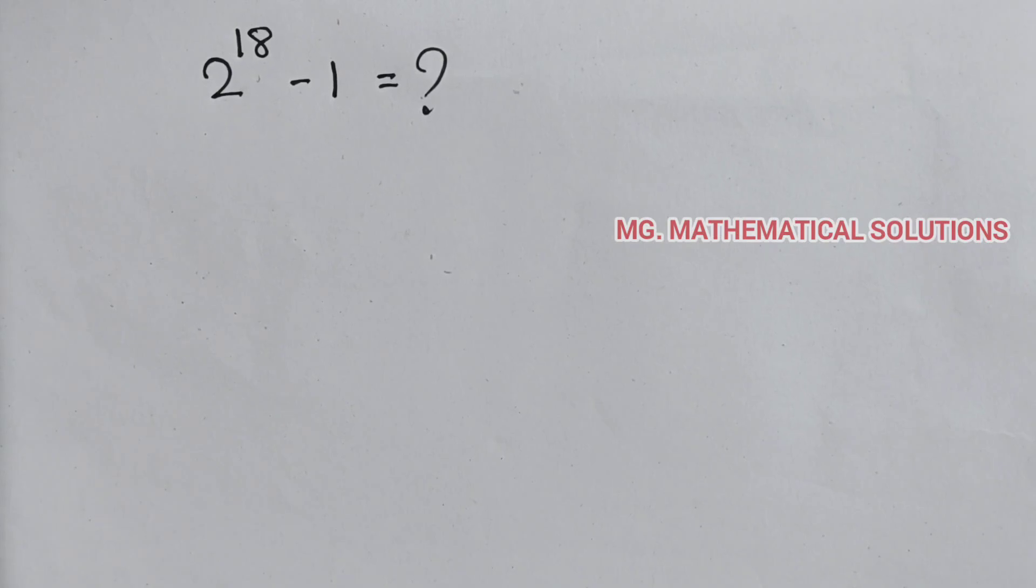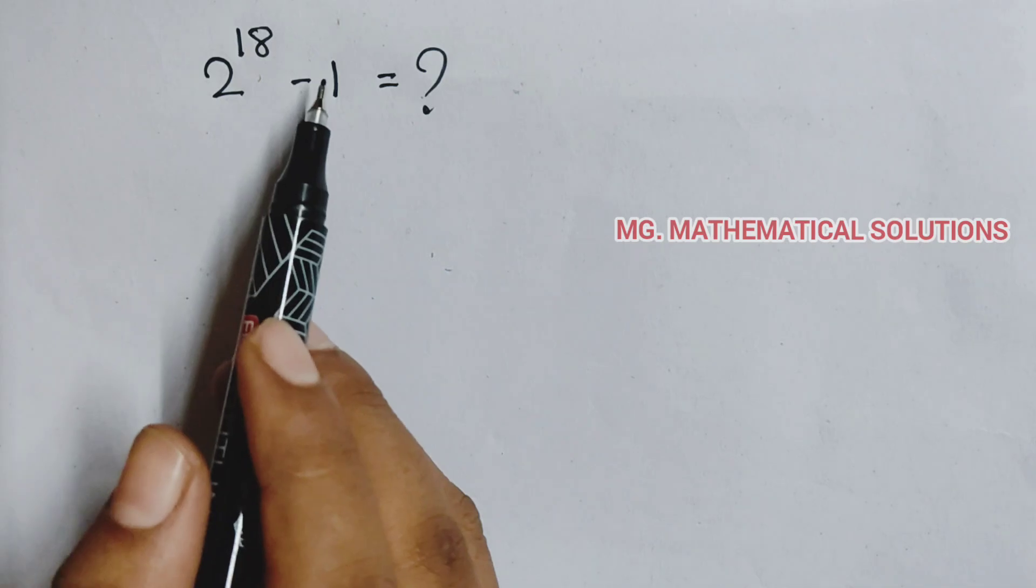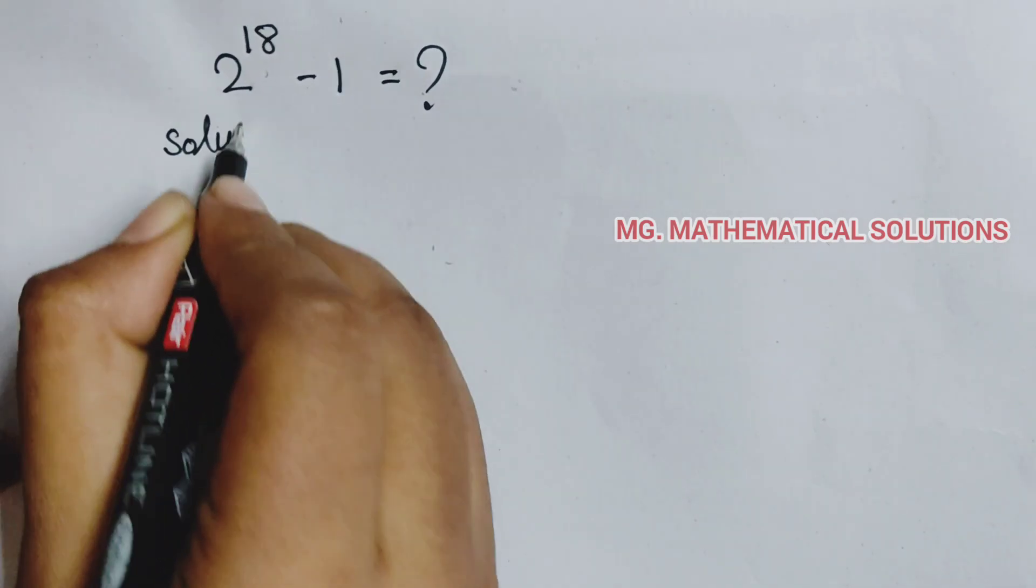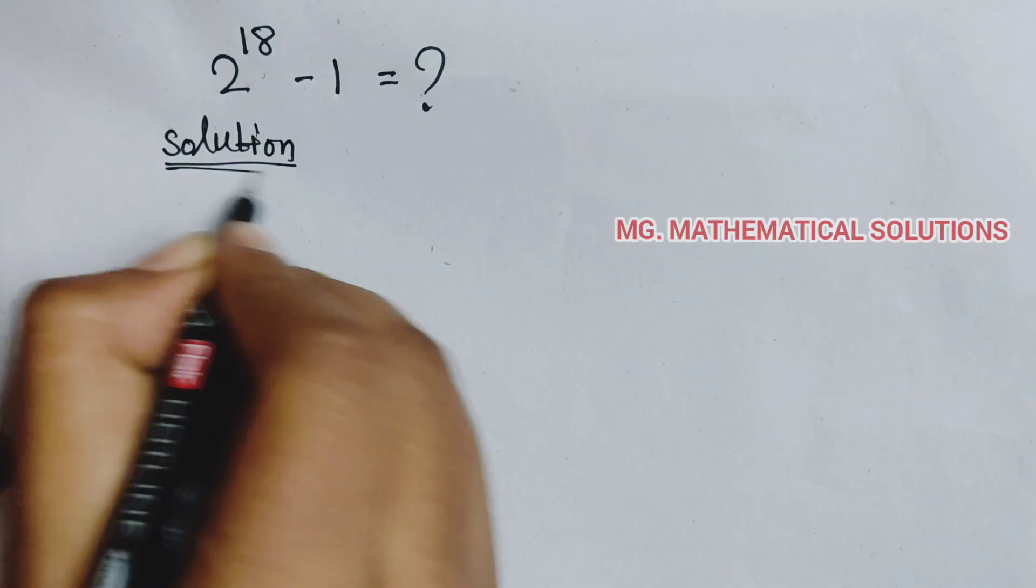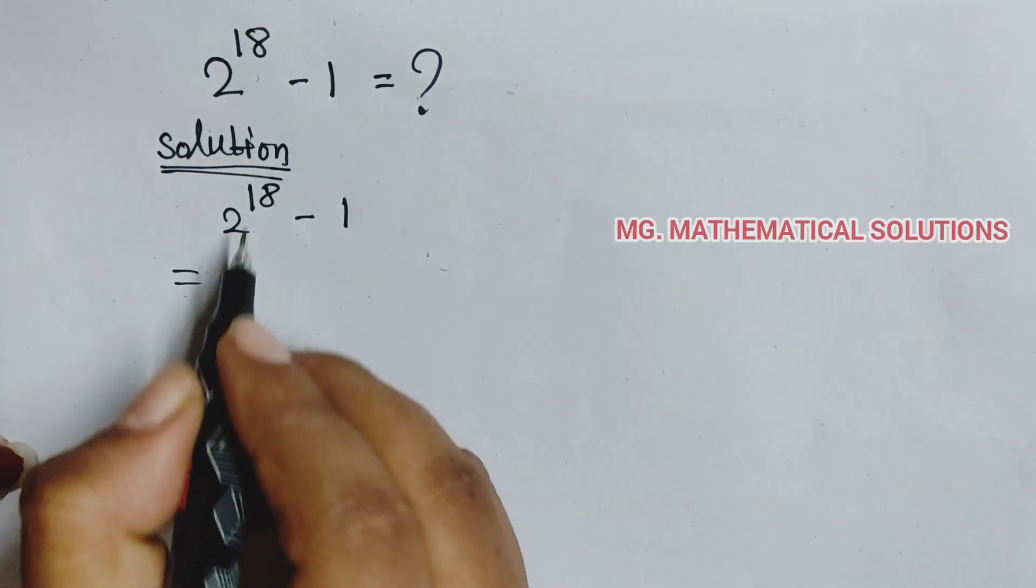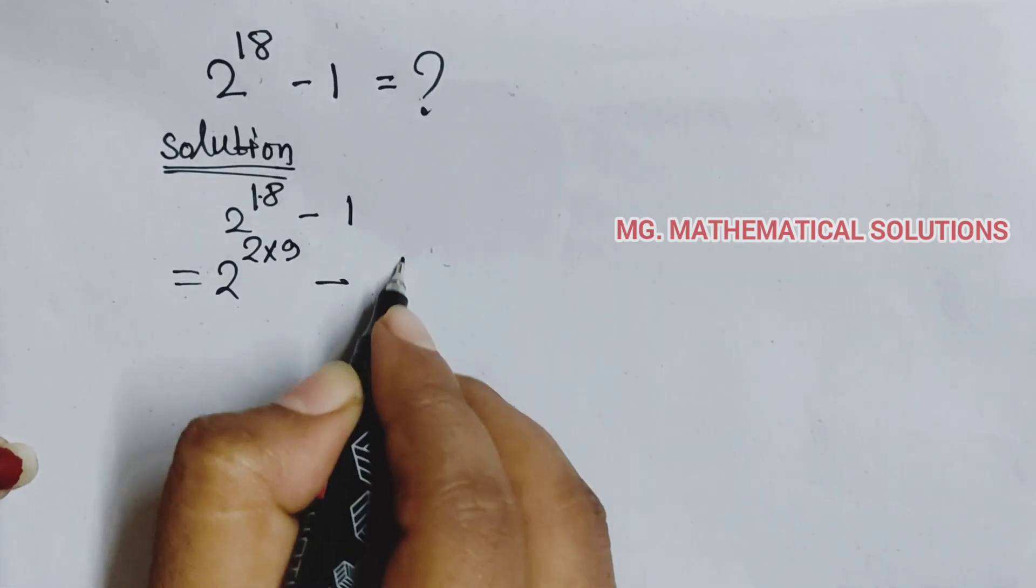Hello students, you are welcome to solve this math which is 2 to the power 18 minus 1 equal to what. Solution: 2 to the power 18 minus 1. We can write 18 as 2 into 9 minus 1.